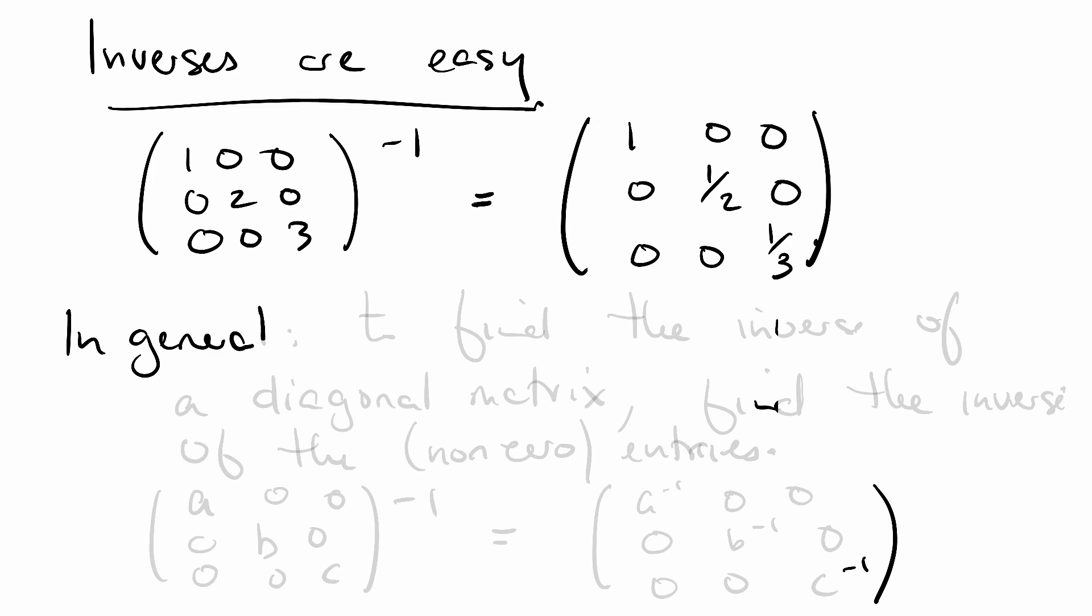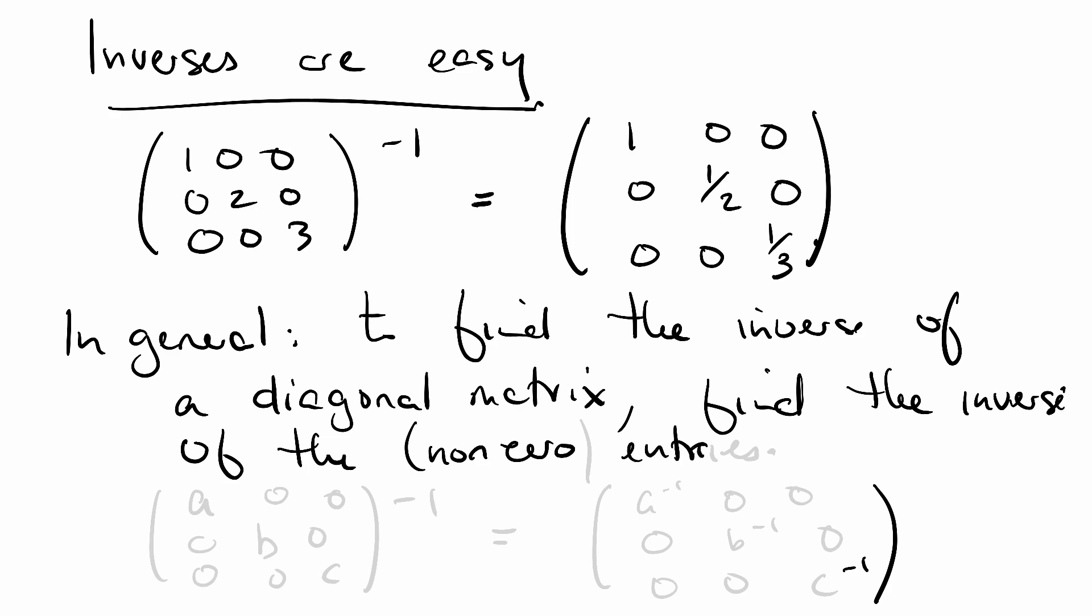So to find, in general, to find the inverse of a diagonal matrix, find the multiplicative inverse of the, of course, non-zero entries. So in general, for a diagonal matrix with a, b, and c down the diagonal, the inverse is going to be a to the negative one, b to the negative one, c to the negative one, and this generalizes to larger diagonal matrices.